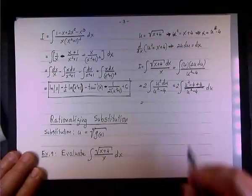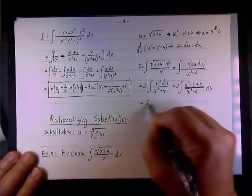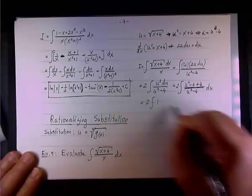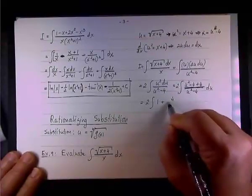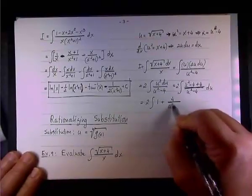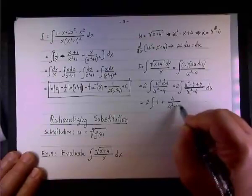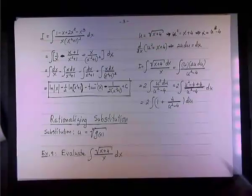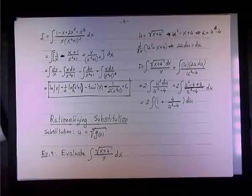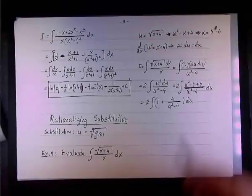And now, if I break this into u squared minus 4, which is 1, and then I end up having 4 over u squared minus 4. So, I have 2 times the integral of 1 plus the integral of 4 over u squared minus 4 du.